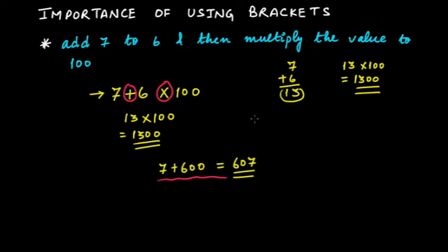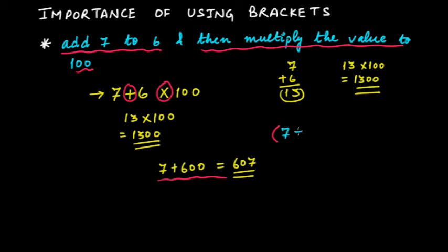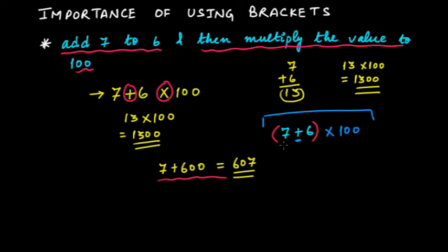The correct way is: add 7 to 6 and then multiply the value by 100. Since the first operation is addition, put it in brackets — write the addition operation inside and then close it, followed by the multiplication by 100. This would be the correct mathematical expression for this question. The coming person would understand that within the bracket there is an addition operation, so they perform the addition first, then multiply, and get the correct answer.